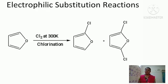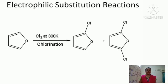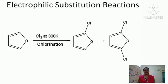Coming to the different types of electrophilic substitution reactions: first, the chlorination of furan. When furan undergoes chlorination by adding chlorine at around 300 Kelvin, we get 2-chlorofuran as well as 2,5-dichlorofuran as the products.